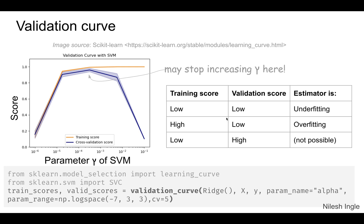The accuracy on the validation set is dropping considerably. We have a table showing these scenarios: a low training score and a low validation score is a sign of underfitting; a high training score and a low validation score is a case of overfitting.